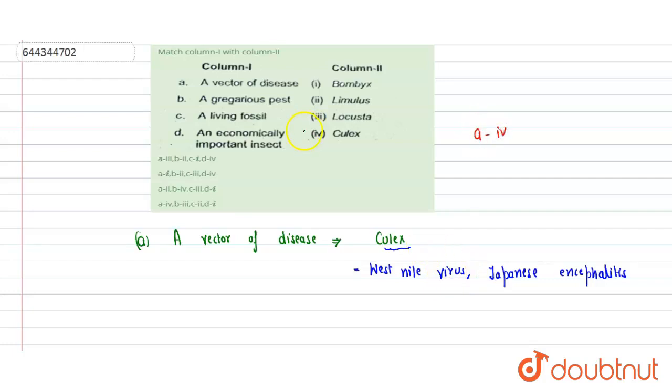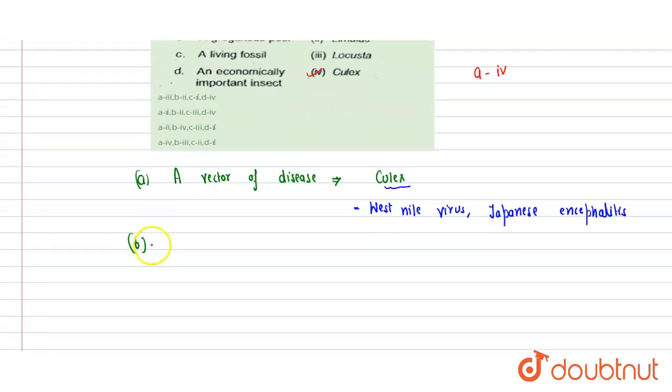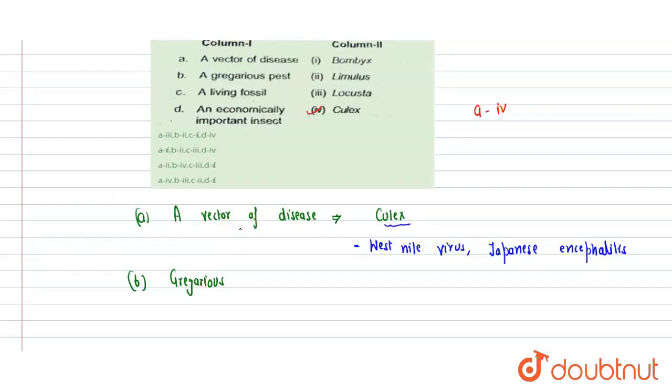So we can say that for a, the correct match is fourth. Next, we see agrarious pest. Gregarious pest is the pest which comes in big flocks and they attack the crop in large numbers, in a bigger group, so they can harm the crop to a larger extent.